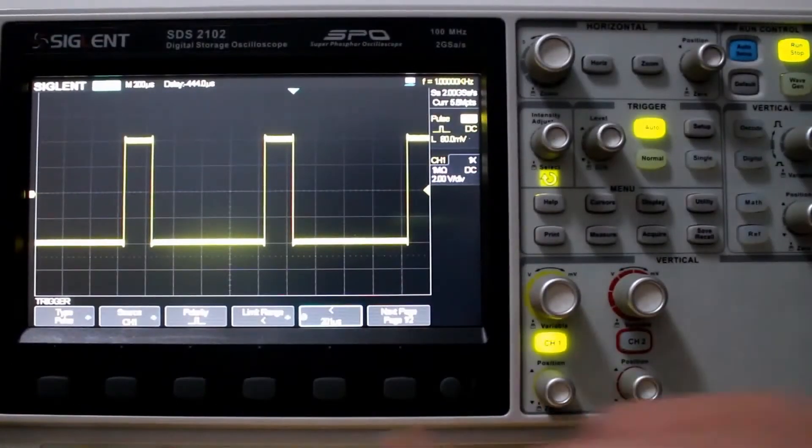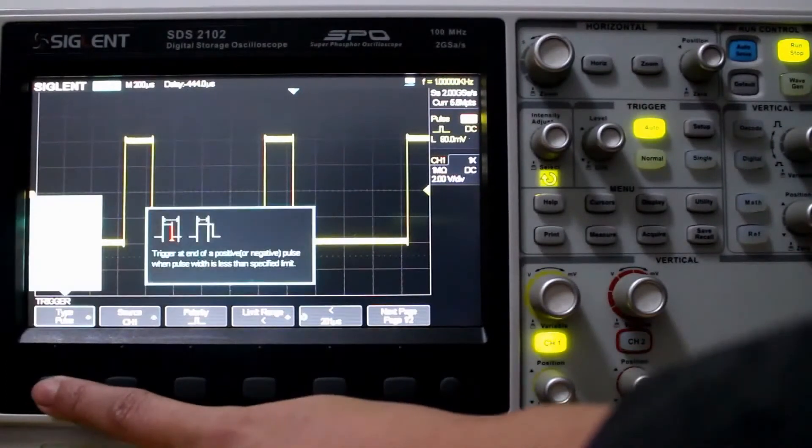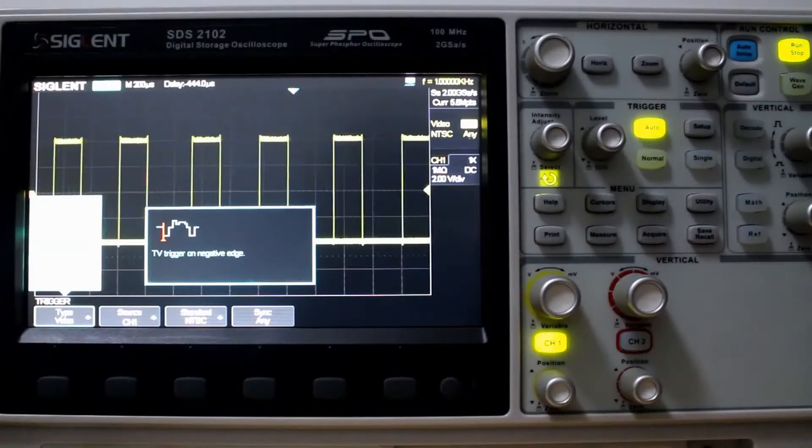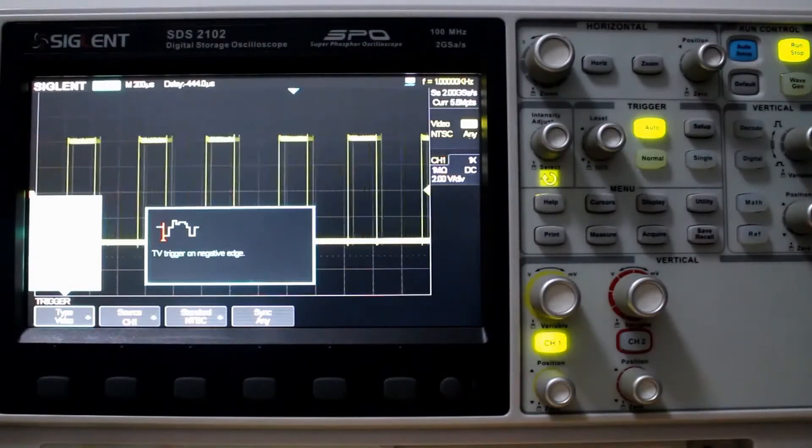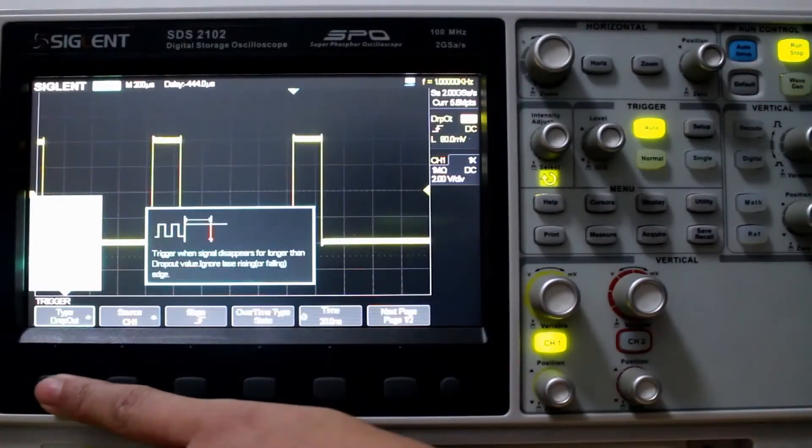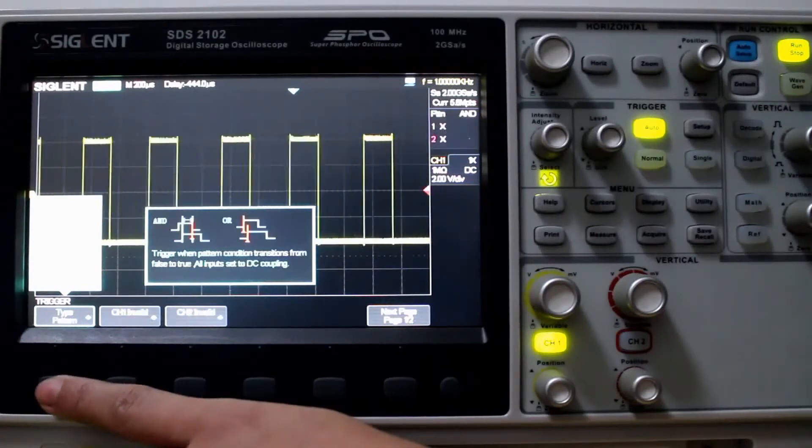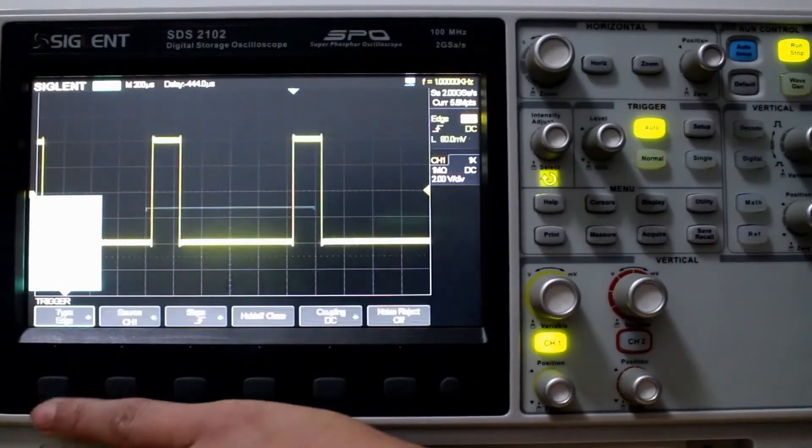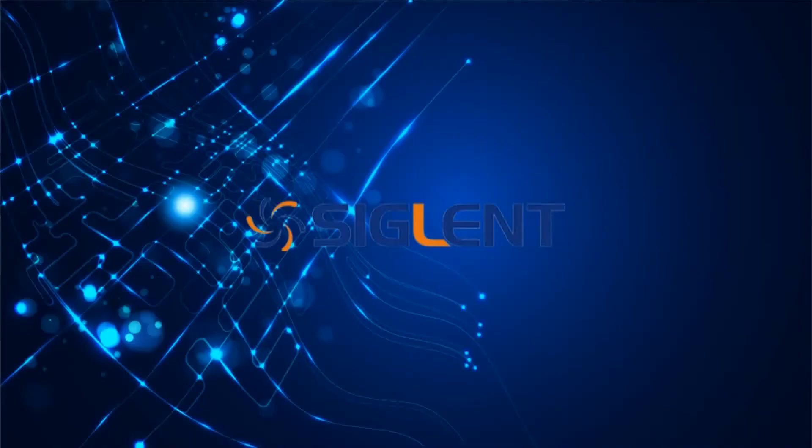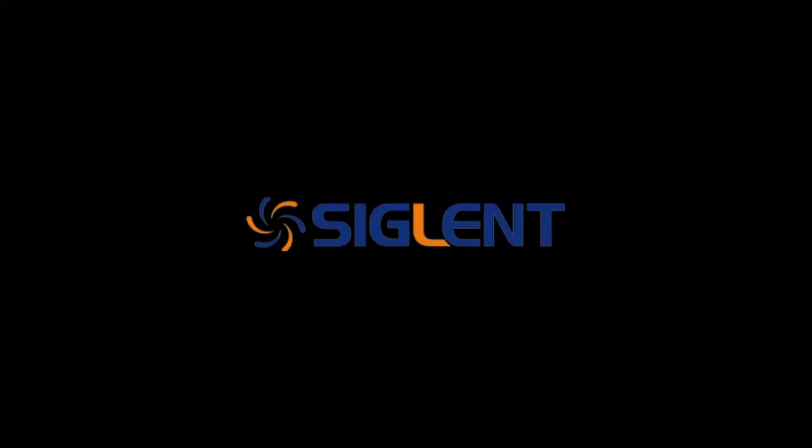Now we finish looking at the first three trigger types. Next we have video. I don't have a video generator at the moment. So we'll do that video another day. And the next trigger type is window. Then interval. Dropout. Runt. And pattern. And Serial 1. Serial 2. And we'll look at those another day. In the future. On the next videos. Thanks for watching. We'll see you next time.